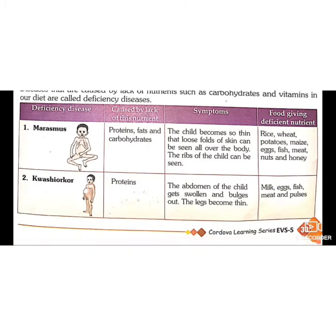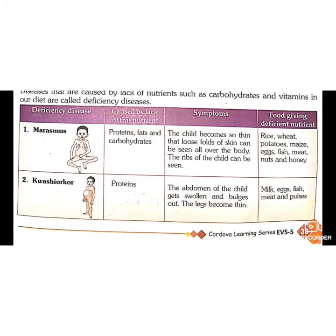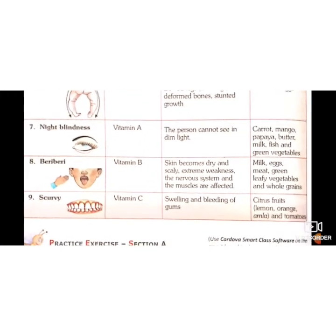Kwashiorkor is a disease caused due to deficiency of proteins, in which the abdomen of the child gets swollen and bulges out, and the legs become thin. To treat it, give milk, fish, eggs, meat, and pulses, which are protein-rich food items.